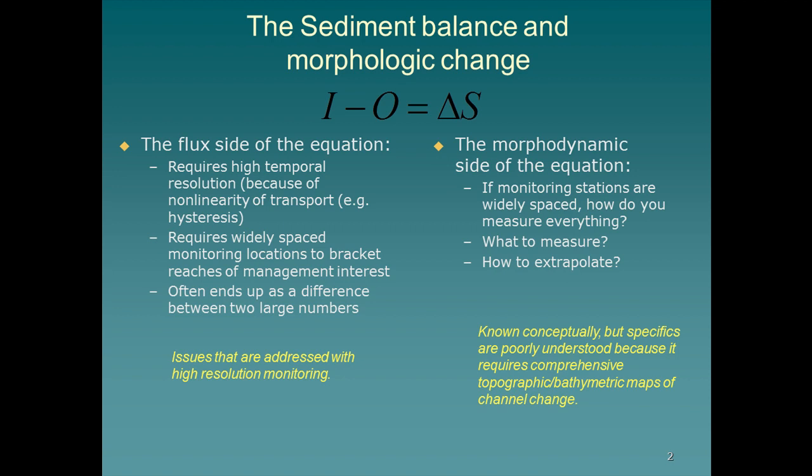The flux side of the equation requires monitoring of actual sediment loads in the river — in this case, fine sediment loads, which almost uniformly move as suspended sediment in the Colorado River. On the other side of the equation, we measure reach-scale changes in topography. This brings up monitoring questions we've talked about today: what to measure, how do we extrapolate, are we measuring the right spots? What this talk looks at is how well our measurements of inputs minus outputs match our corollary measurements of changes in storage.